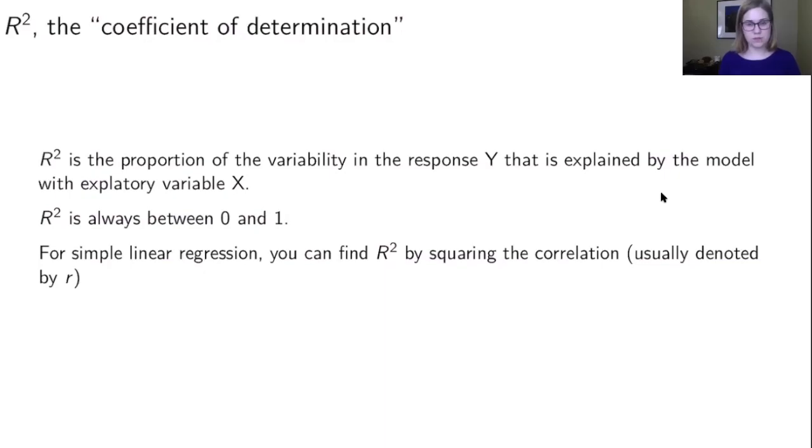So we've talked about doing inference for a slope, both a confidence interval and a hypothesis test. And now we want to do a little bit of assessment to see how appropriate it is to use the model. So there's another statistic that we haven't talked about yet, which is R squared. It's called the coefficient of determination. It's the proportion of variability in the response that can be explained by the model with the explanatory variable.